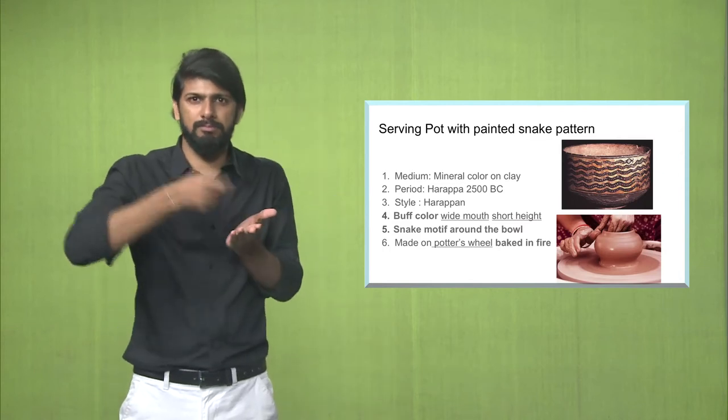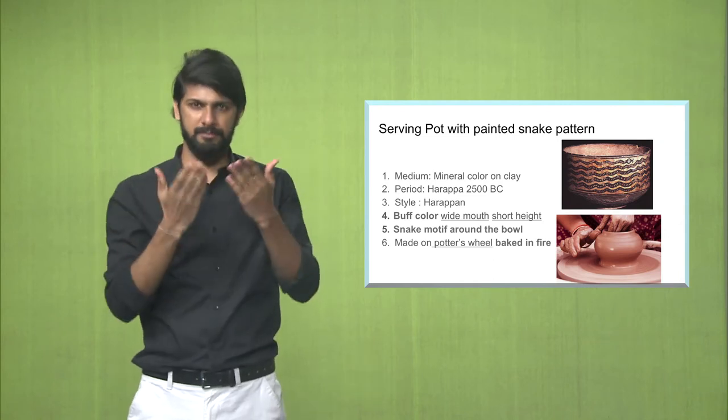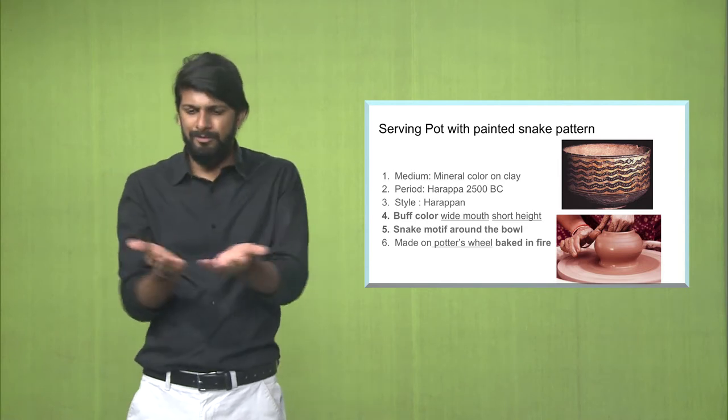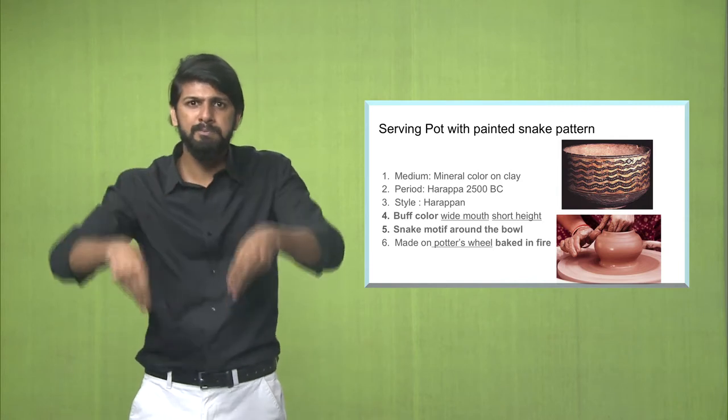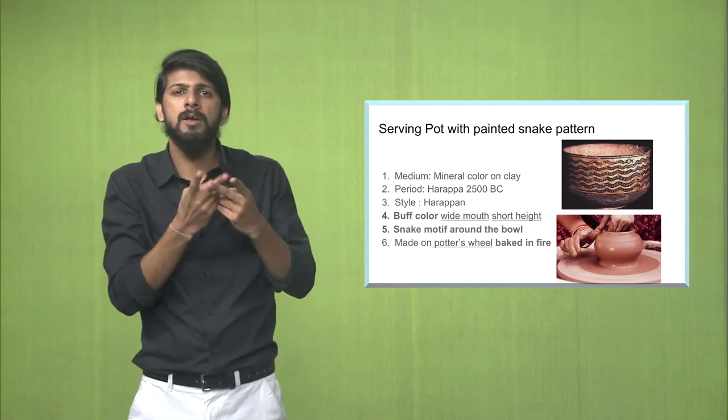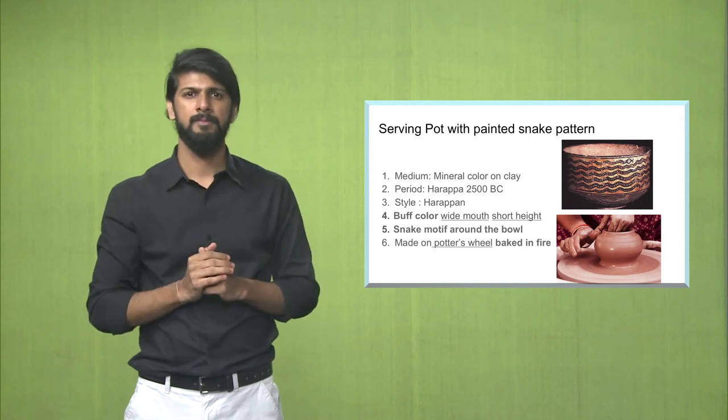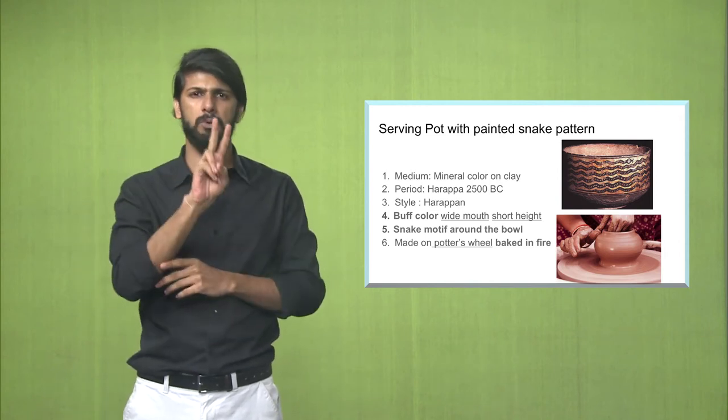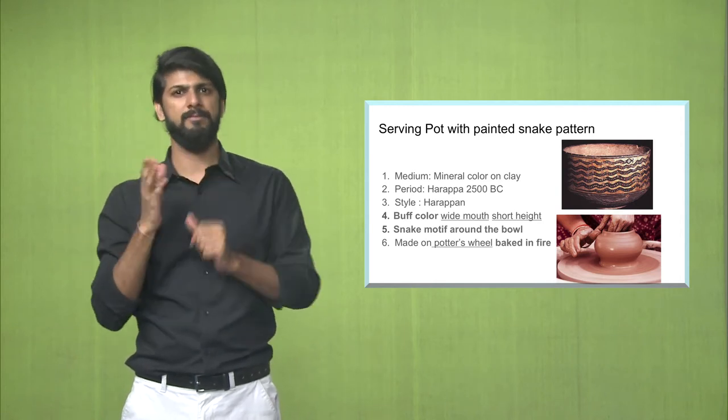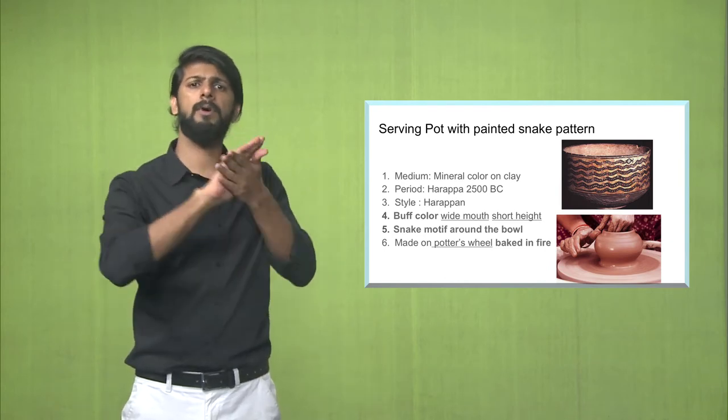This is the first pottery. It is a serving pot used for serving food and it has a painted snake pattern. Let us understand how it was made. It was made with clay on a potter's wheel, and after that had mineral colors used to paint the snake pattern. The period is 2500 BC Harappan, and the style is also Harappan.